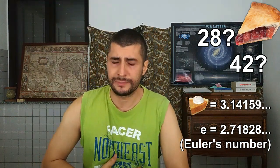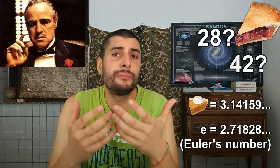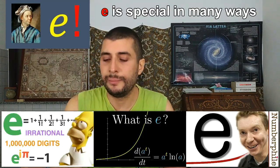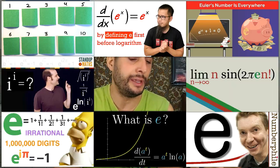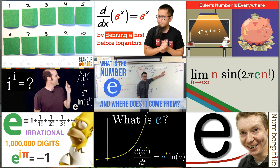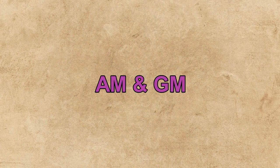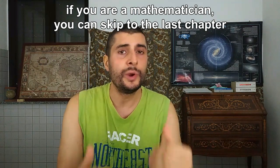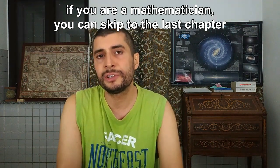I apologize — I'm starving. Today the mafia stole my gondola and I couldn't go get some spaghetti. Anyway, there are many, many reasons to choose E as base. I'm gonna show you my favorite. I will only use very simple mathematical concepts so that everyone will be able to follow, except for the last chapter where I will use the concept of limit.